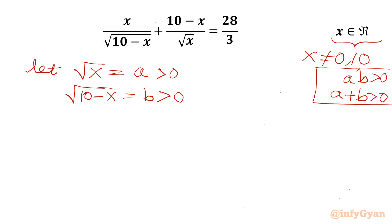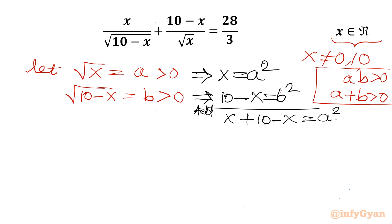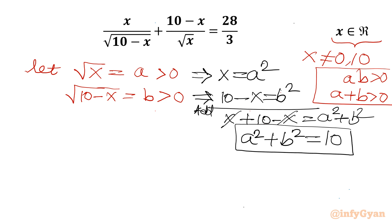From the first substitution, x equals a squared. From the second, 10 minus x equals b squared. Adding these two equations: x plus (10 minus x) equals a squared plus b squared, so the x terms cancel and we get a squared plus b squared equals 10. Let's call this equation number 1.